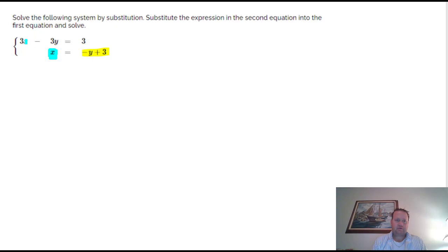So I'm going to replace that x right there with a negative y plus 3. So I'm going to rewrite the top equation and I'm going to get a distributive property situation, because that says 3 times x, and this right here is what I'm going to put in place of x.